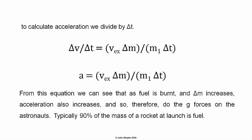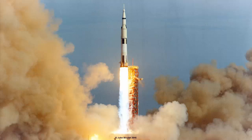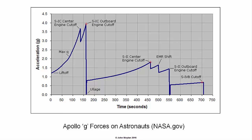If the velocity of the exhaust gases out the back of the rocket is constant, and a constant amount of fuel is burnt over time, the force driving the rocket forward will remain constant while the mass of the rocket decreases. At launch, 90% of the mass of a typical rocket is fuel. For example, the Saturn V rockets used in the Apollo program weighed approximately 2,957,600 kg at launch, of which approximately 2,725,400 kg was fuel. If the force on this mass remains constant as the fuel is burnt, the acceleration of the rocket will increase over time. This is, in fact, what we see.